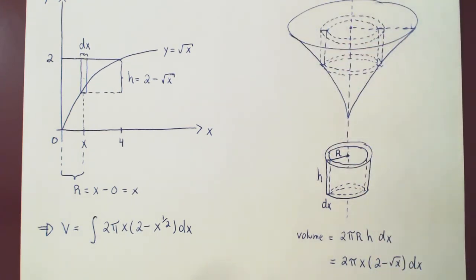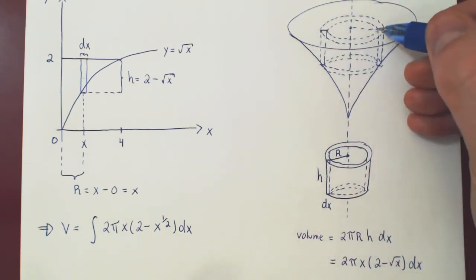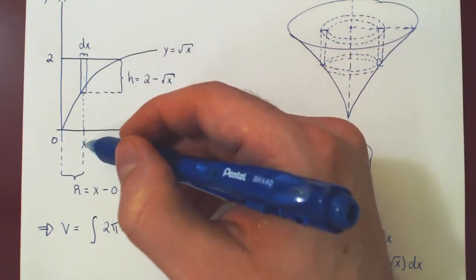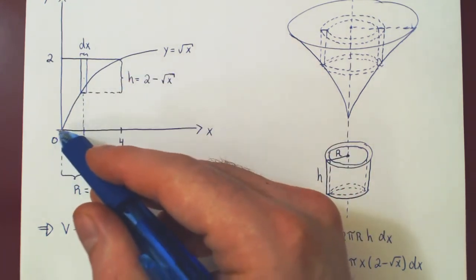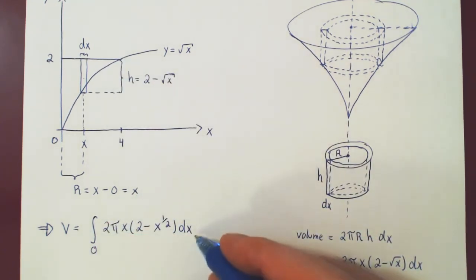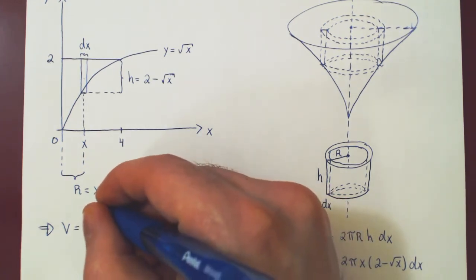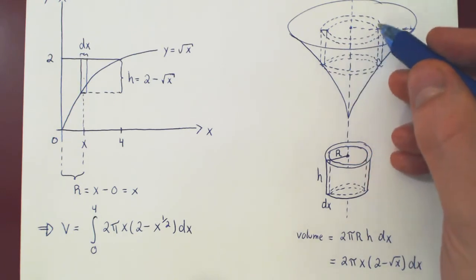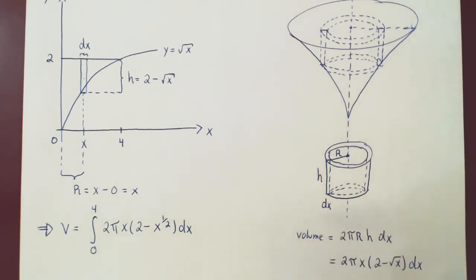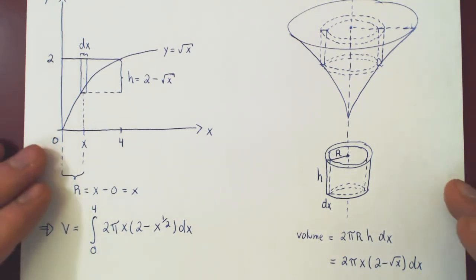By adding the volume of every little cylindrical shell within the full solid, we obtain the total volume. If we didn't make any mistakes, we should arrive at the same answer as with the disk method — which was 32 over 5 pi.